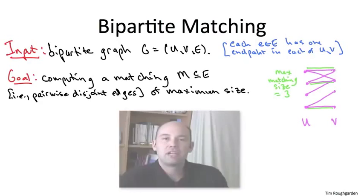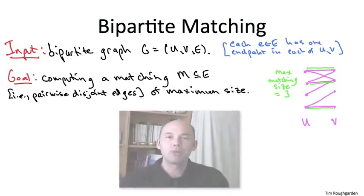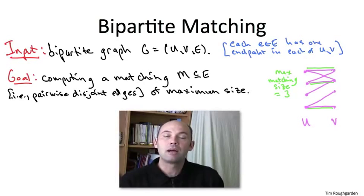So bipartite matching is a totally fundamental problem. There are constraints on which objects you can pair up, and you want to pair up as many objects as possible. I'm happy to report that the maximum matching problem is solvable in polynomial time. In fact, it's polytime solvable not just in bipartite graphs, which is what I'm discussing here, but even in general non-bipartite graphs.